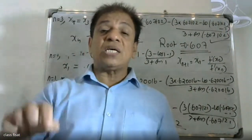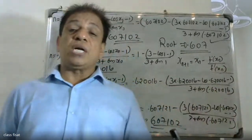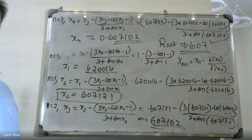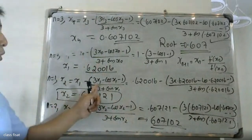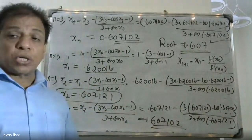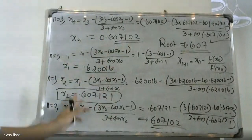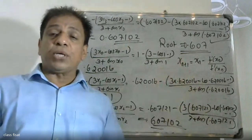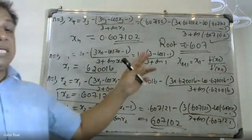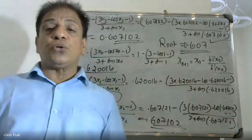Taking x0 as 1, we computed x1, x2, x3, and x4, all converging to 0.607102. Since x3 and x4 agree to 3 decimal places, the root correct to 3 decimal places is 0.607.